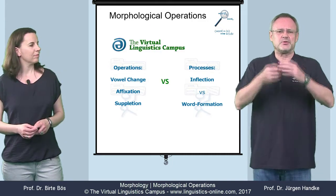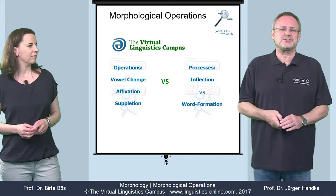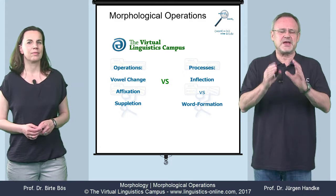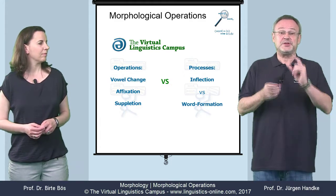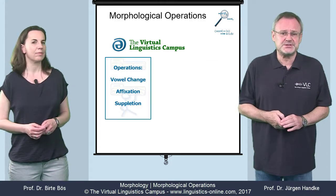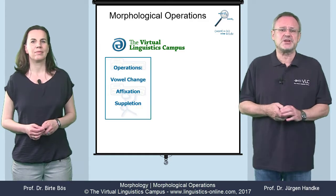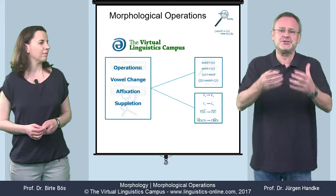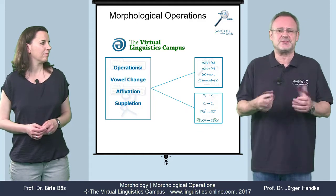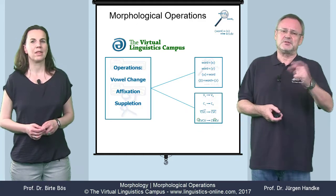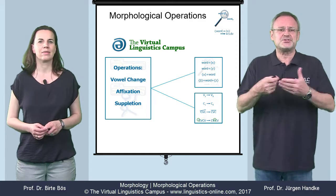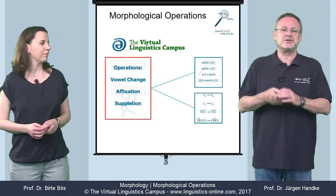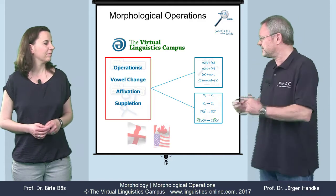In our approaches to words and word structure, these two aspects of morphology are strictly kept apart. We define morphological operations as how words can be modified — that is, by the addition of new material, by changing existing material, etc. In the following, we will outline, discuss, and exemplify the central morphological operations in present-day English and in other languages.